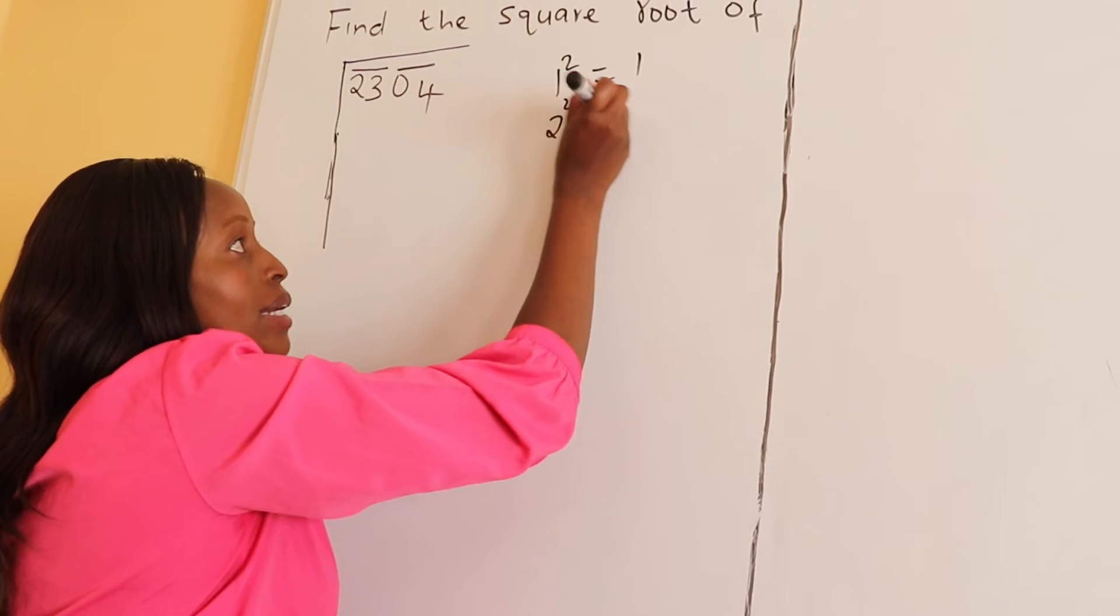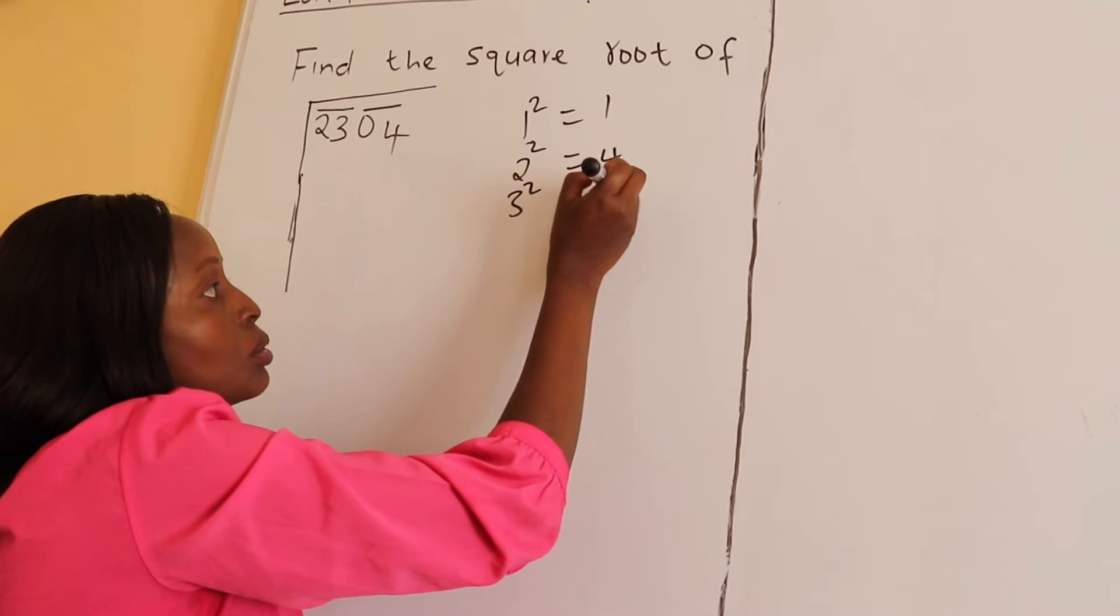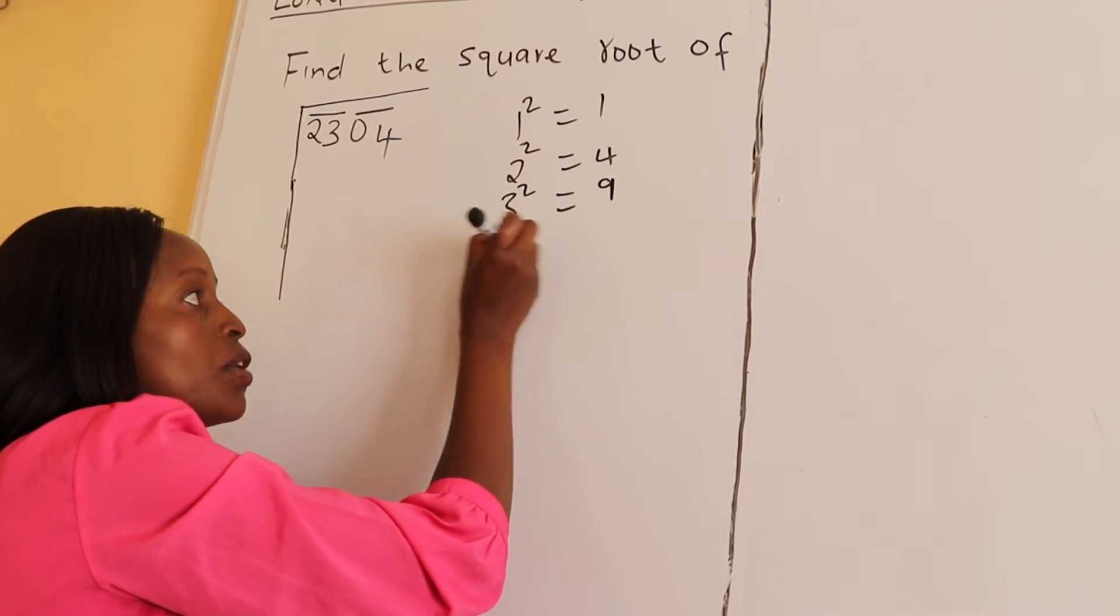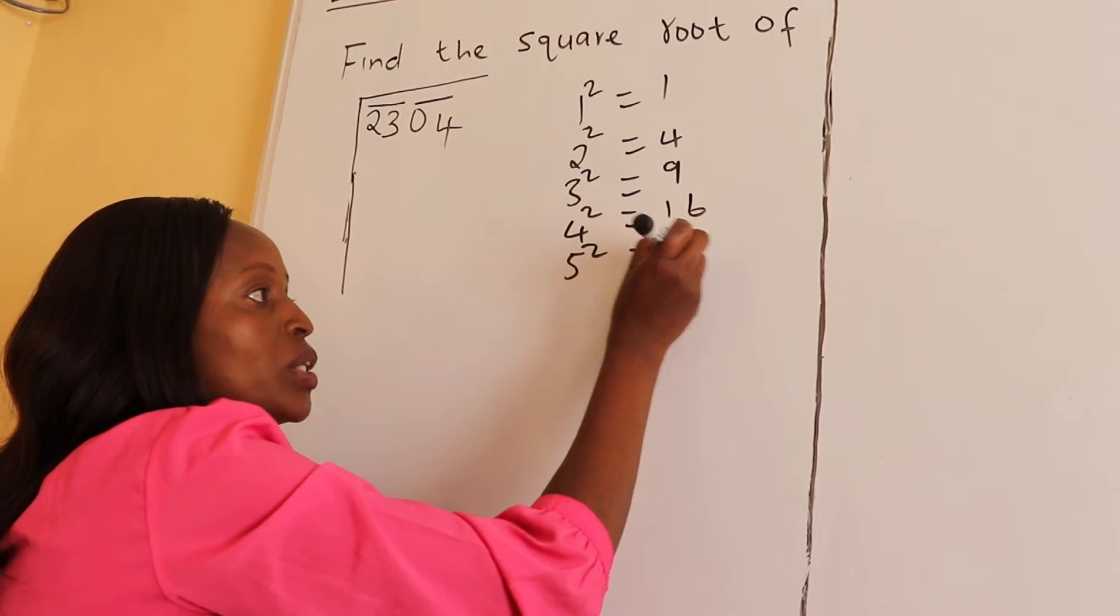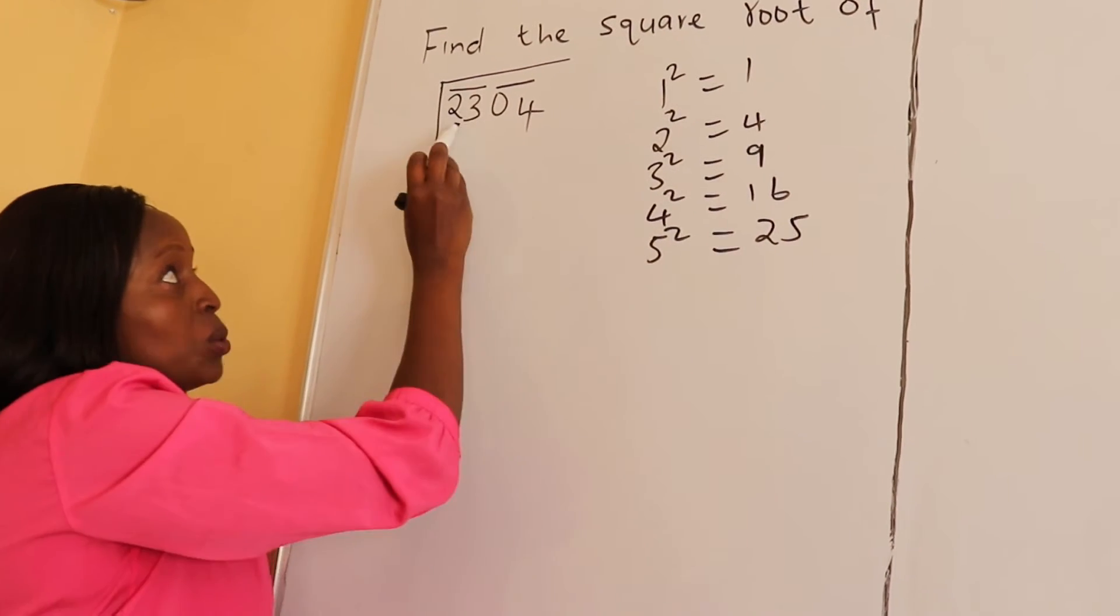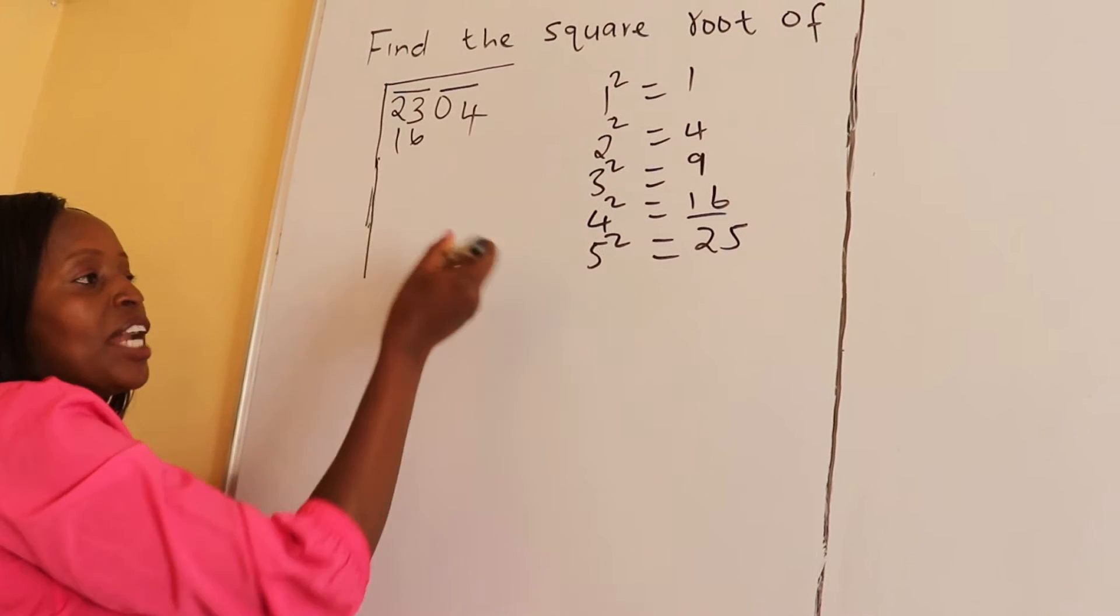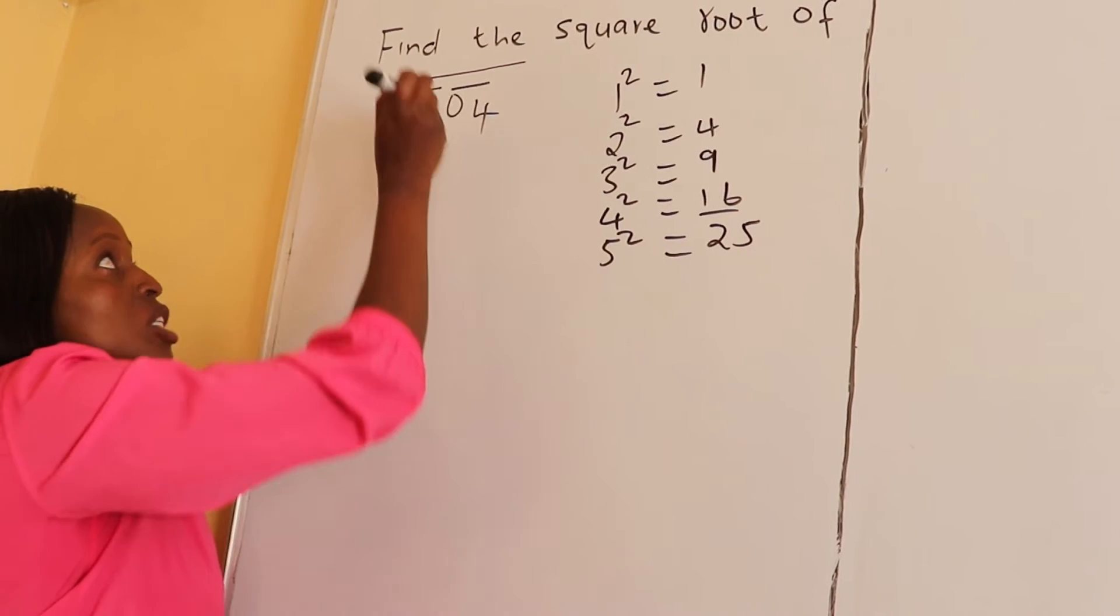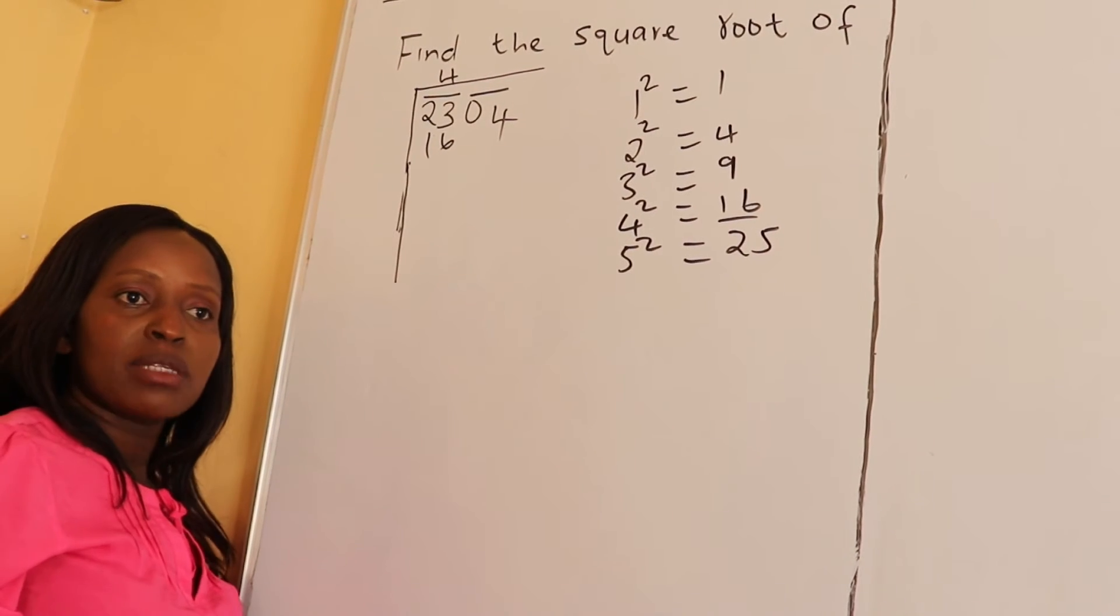As you know, 1²=1, 2²=4, 3²=9, 4²=16, 5²=25. Therefore, a perfect square which is near 23 is 16. So I put 16 there, and which number when we squared we had squared? 4. So 4 we put it here, which now becomes our quotient.